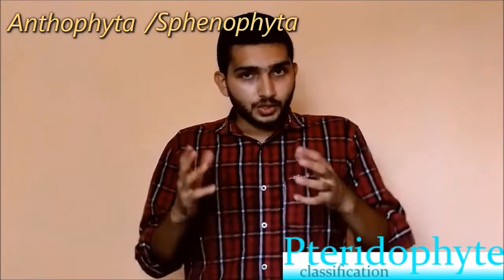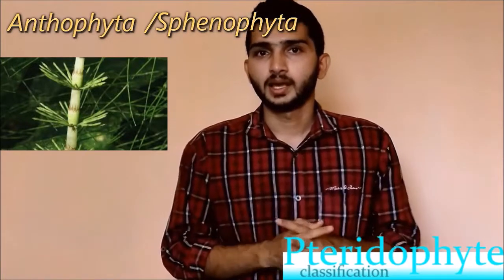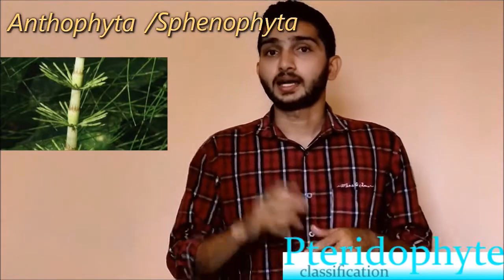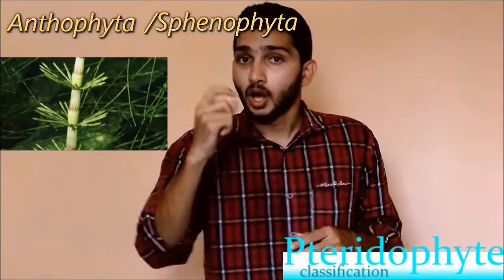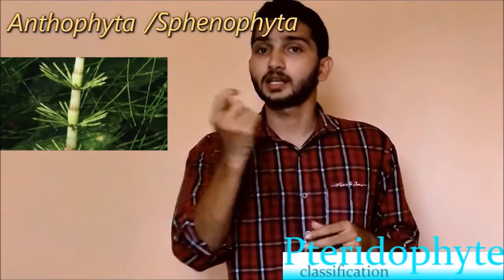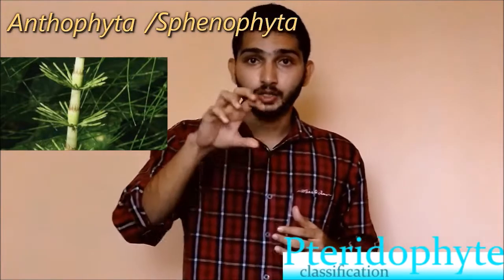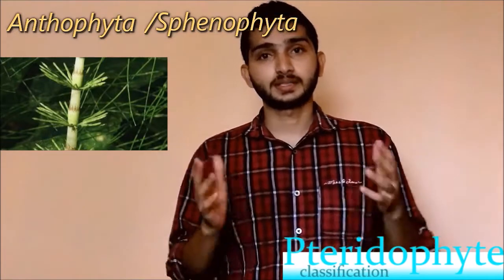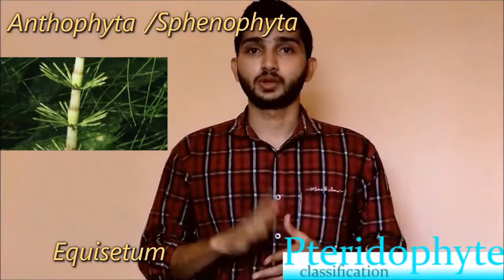In Sphenophyta, the plant body is thin and silica deposition is seen on the stems. Leaves are present and arranged in a whorl around the node. The stem appears with ridges and grooves. These are mainly homosporic type. The example for Sphenophyta is Equisetum.